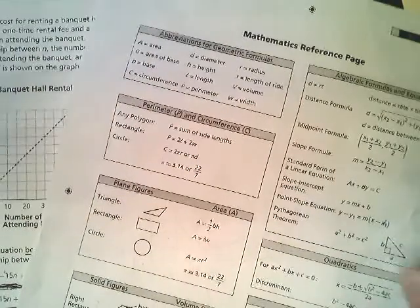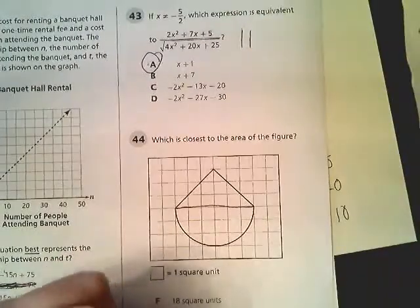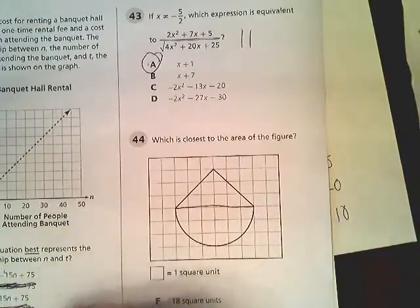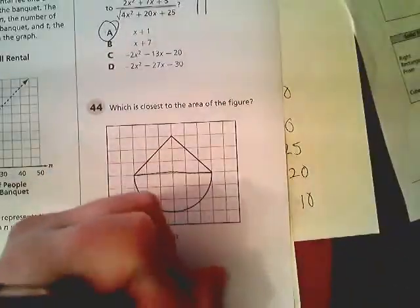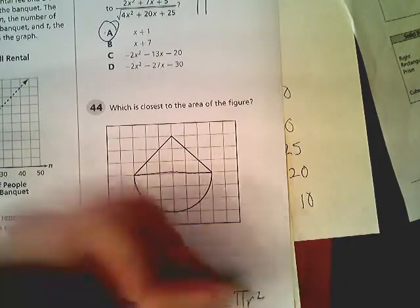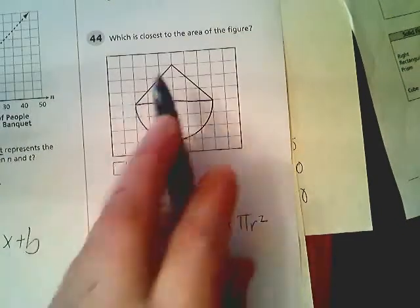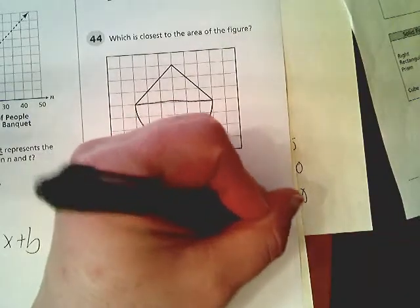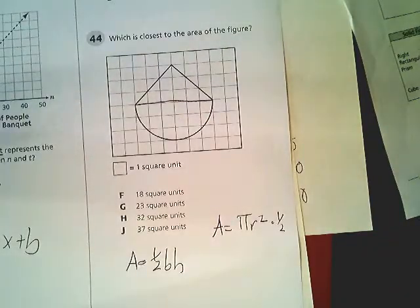It says the area of that triangle is one-half base times height. The formula for area of a circle is pi r squared, but we're going to add a caveat to that. Because this is only half a circle, we're going to multiply that times one-half.